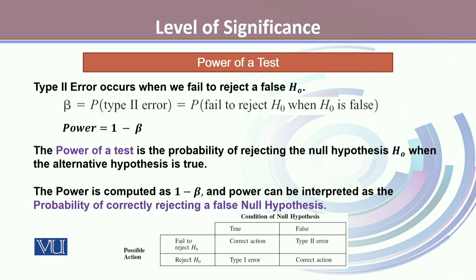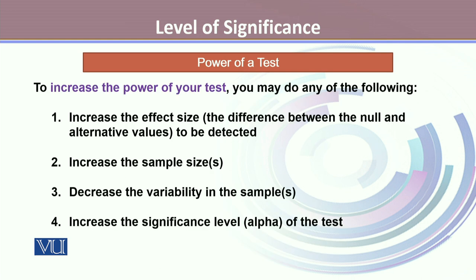The power of a test is equal to 1 minus beta — that is, 1 minus the probability of committing type 2 error. So, the power of a test is the probability of rejecting the null hypothesis when the alternative hypothesis is true. The power is computed as 1 minus beta and can be interpreted as the probability of correctly rejecting a false null hypothesis.